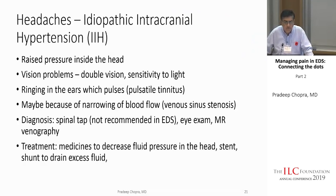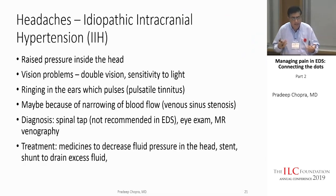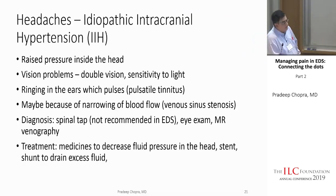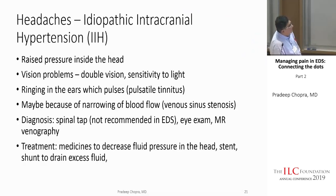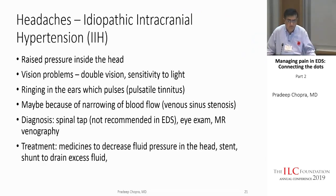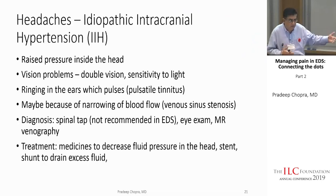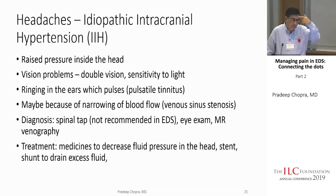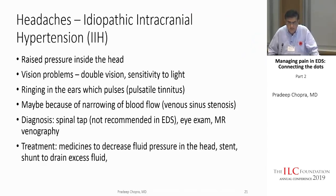MR venography is the best diagnostic approach — dye is injected into a vein to look at blood flow distribution inside the brain, identifying venous stenosis. If there is a narrowing, the treatment is usually a stent. Medications haven't shown great results in personal experience. The philosophy is treat what's broken: if there's a narrowing in the sinus, you need to open it up. A shunt to drain excess fluid is another option.